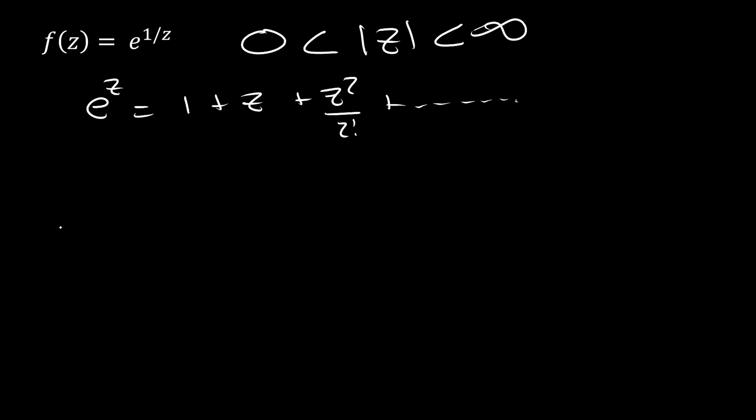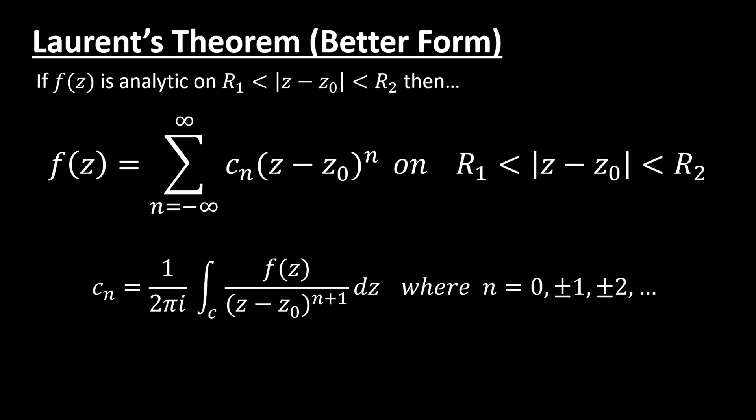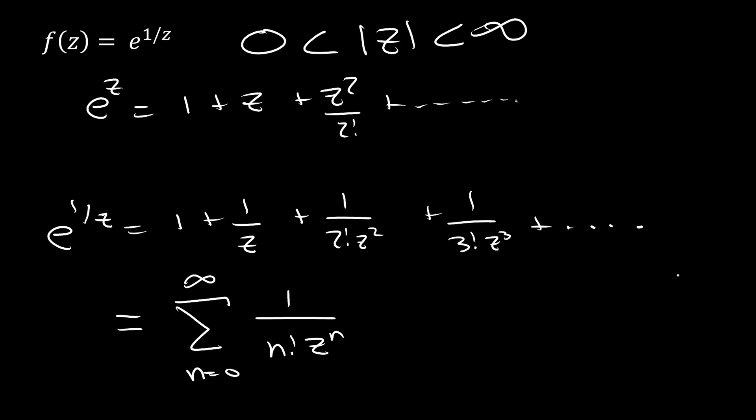So we can say that e to the 1 per z equals 1 plus 1 per z plus 1 per 2 factorial z squared plus 1 per 3 factorial z cubed and so on. This can be rewritten and simplified with the following. With this, notice that with n being in the denominator, we're going to have negative powers of n. That's really where the simplified form makes things a lot easier. Going back to the simplified form, you can see our sum is from negative infinity to infinity. This accounts for negative powers. We don't need a whole separate sum to account for the negative powers.